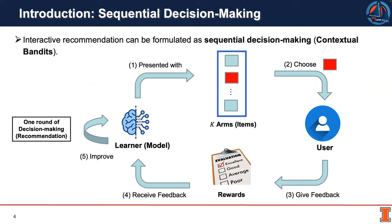Here we use the framework of the contextual boundaries. In a round of recommendations, the learner is presented with key arms in the previous rounds to recommend similar items based on the history. On the other side, the learner is required to recommend one item to the user and receive the feedback. In the end, the learner could improve itself based on the feedback.